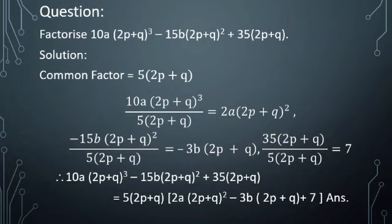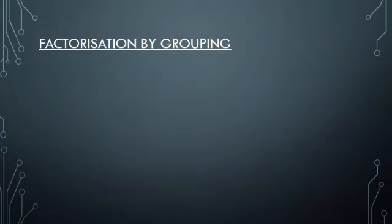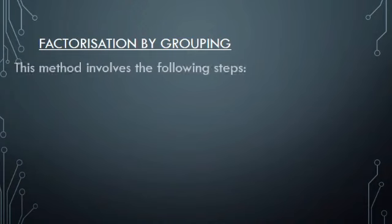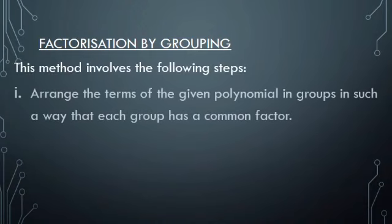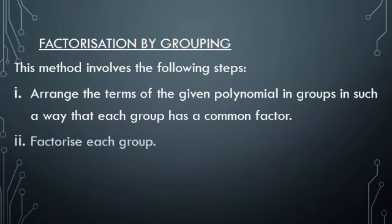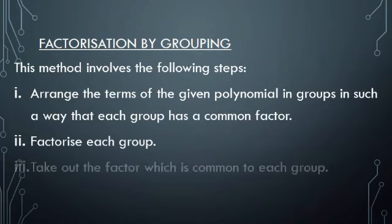Now, factorization by grouping. This method involves the following steps: Arrange the terms of the given polynomial in groups such that each group has a common factor. Factorize each group. Then take out the factor which is common to each group.